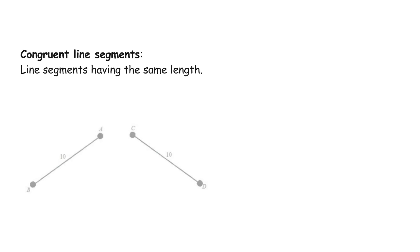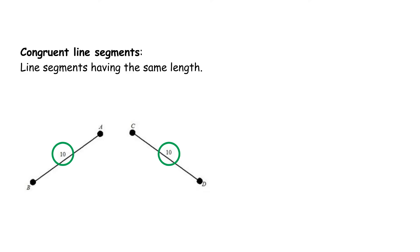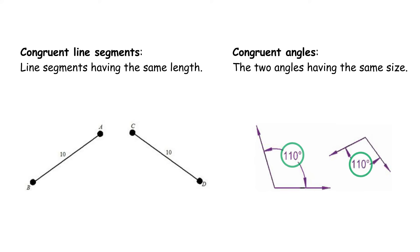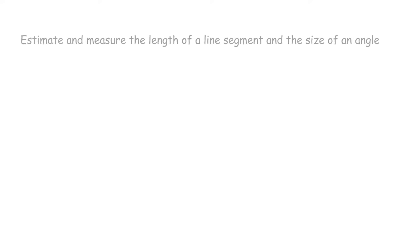Congruency of line segments and congruency of angles. Congruent line segments are line segments having the same length. Congruent angles are two angles having the same size. Estimate and measure the length of a line segment and the size of an angle.